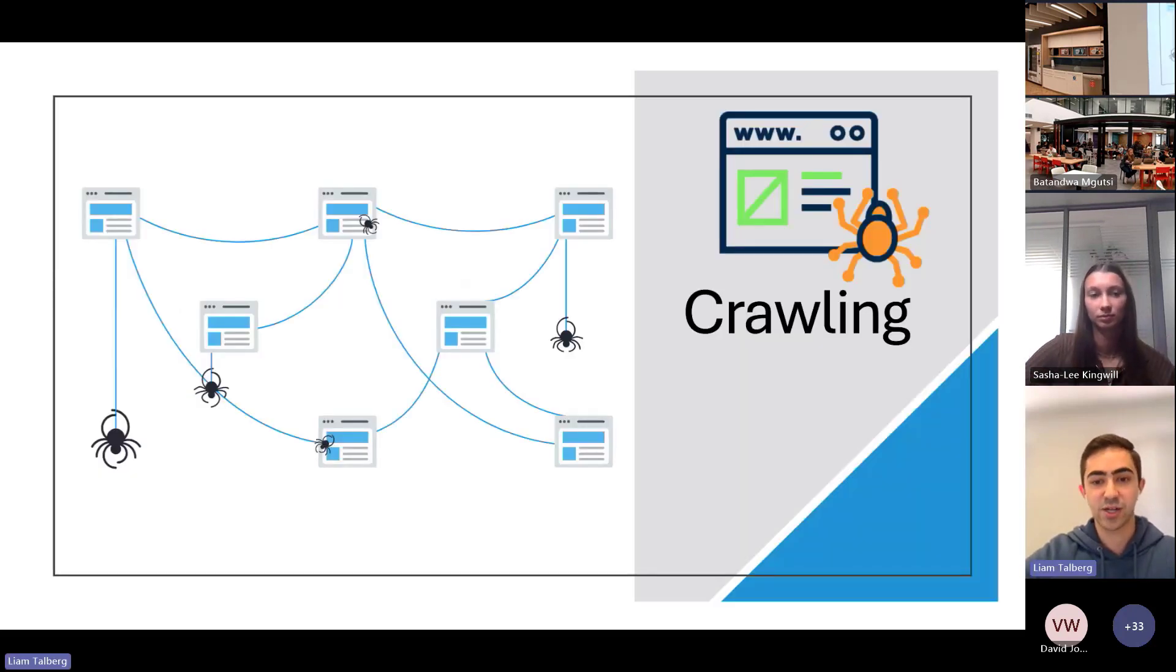The first step for any search engine is for it to extract the knowledge it needs to search over. This process for a search engine such as Bing or Google involves scouring the internet, cataloging all the information on every site, including the text, video, pictures, and metadata. In this process, interactive code such as JavaScript is also run, and all this information is logged and recorded. This process is called crawling, and for internet search engines, it occurs on a massive scale.